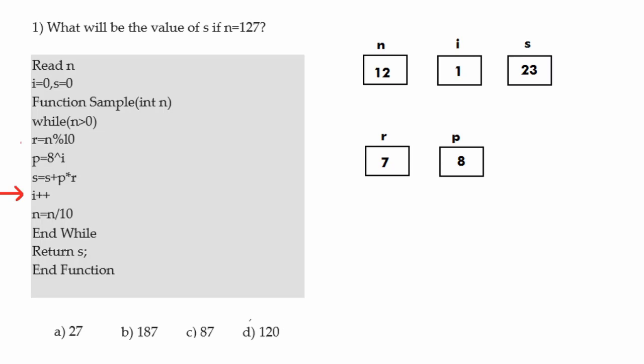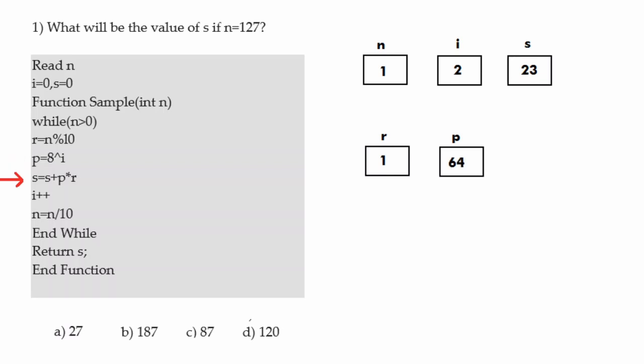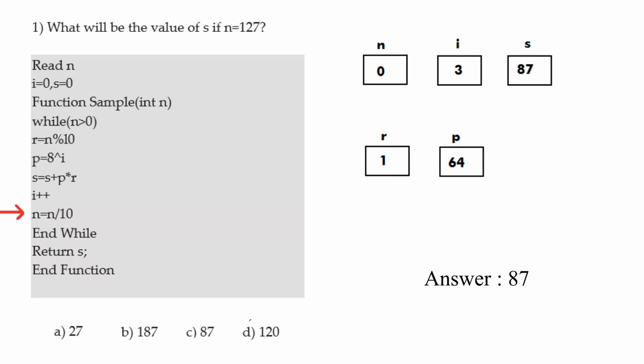i increments to 2, and n equals n divided by 10, so n becomes 1. We check n greater than 0 — n is 1, so it's true. r equals n modulo 10, so r becomes 1. p equals 8 to the power 2 gives us 64. Then s equals 23 plus 64 times 1, giving us 87. i increments to 3 and n becomes 0. The loop condition fails, so we exit and return s, which is 87. The answer to this pseudocode is 87.